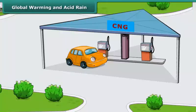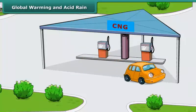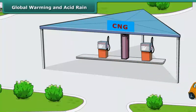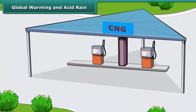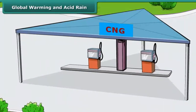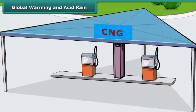There are ways we can reduce the negative impact on the environment by choosing the right fuel. A great example of this is cars, buses, and auto rickshaws that run on compressed natural gas or CNG instead of petrol. CNG is a much cleaner and cheaper fuel.